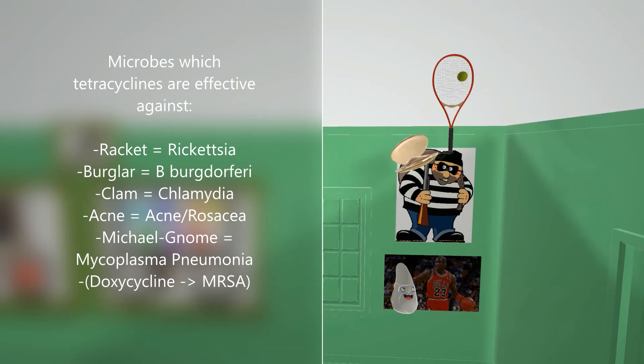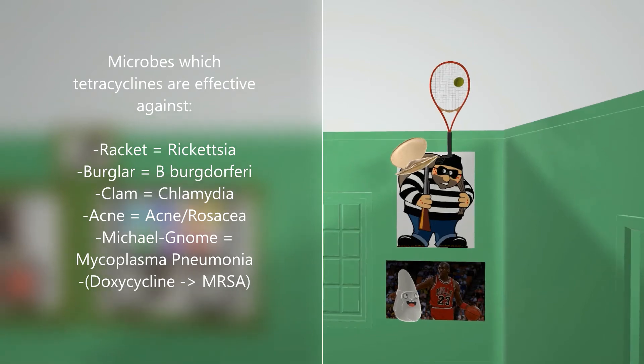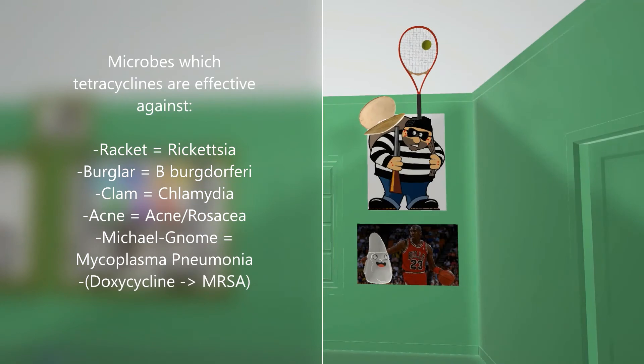Under this robber we have a picture of Michael Jordan playing basketball with the gnome—Mike playing with the gnome for Mycoplasma pneumonia. These are the microbes which tetracyclines are used against.